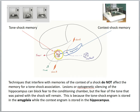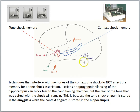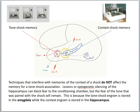We have in previous lessons learned about the amygdala as being important in fear conditioning to a tone, for example, and the hippocampus is critical for contextual fear conditioning. Techniques that interfere with memories of the context of a shock do not affect the memory for a tone-shock association. Lesions or optogenetic silencing of the hippocampus can block fear to the conditioning chamber, but the fear of the tone that was paired with the shock will remain. This is because the tone-shock engram is stored in the amygdala, while the context engram is stored in the hippocampus.